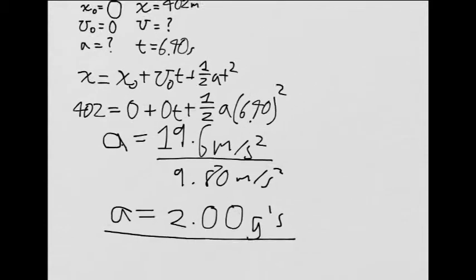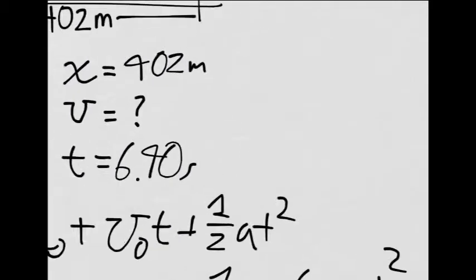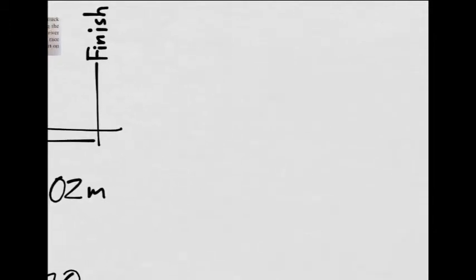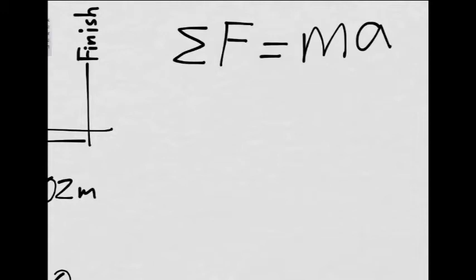Now the second part asks, what horizontal force must the road exert on the tires? Now we're dealing with Newton's second law. So let's write out the summation of all the forces equals the mass times the acceleration. The mass is, as stated earlier, 485 kilograms.